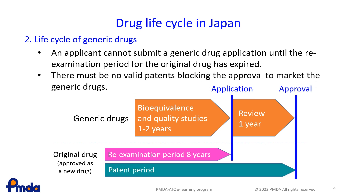There are no patents that prevent the marketing approval of generic drugs. To begin the approval process, the generic applicant must certify that the patents of the original drug or relevant patents are no longer enforceable or will not be infringed upon by the manufacture, use, or sale of the generic product. The Ministry of Health, Labour and Welfare (MHLW) makes a judgment on the approval. This requirement is necessary to ensure a stable supply of generic drugs.